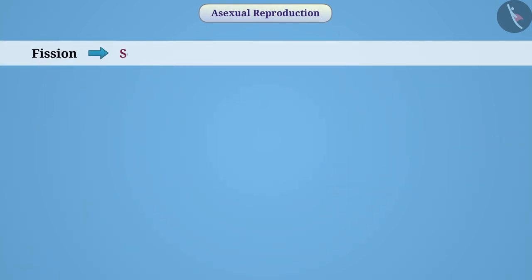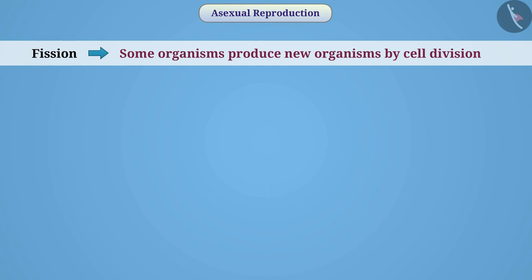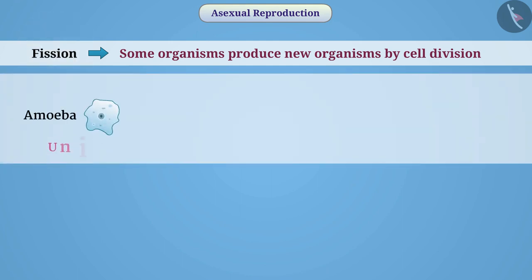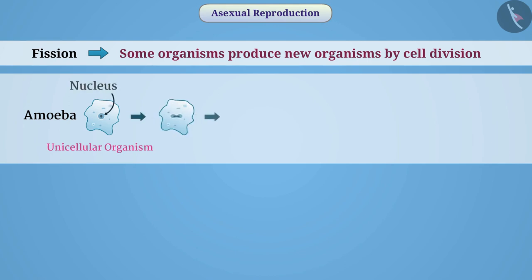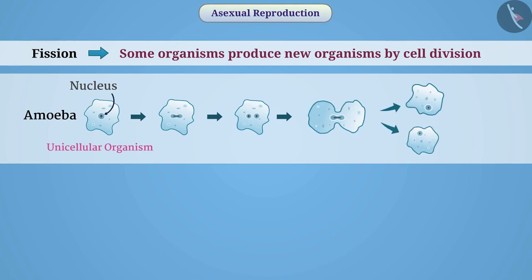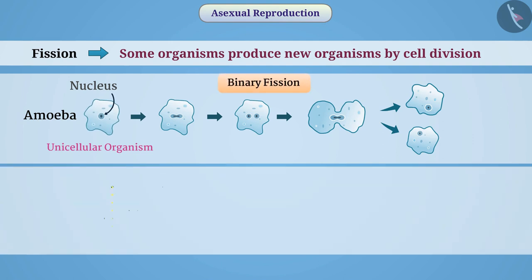Fission. Some organisms produce new organisms by cell division — we call this method fission. Amoeba is a unicellular organism. In amoeba, reproduction begins with the division of the nucleus. When division of the nucleus is complete, the cell also divides into two parts. This division can occur from any part of the amoeba, and during the division process, each cell carries one nucleus. The formation of two cells by the division of one cell is called binary fission.